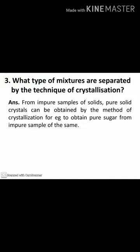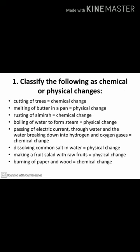Physical changes are those where no new substance is formed; chemical changes are those where a new substance is formed. For example, cutting of trees is a chemical change because all chemical reactions stop and we cannot get back the original tree from wooden pieces. Melting of butter in a pan is a physical change since there is no change in chemical composition — only the physical state changes from solid to liquid.